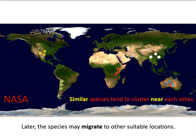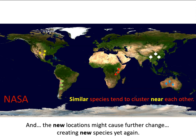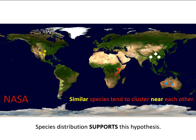Once a species originates, it may migrate to other suitable locations if it can, expanding its range. The new locations might cause further change, creating new species yet again. This will be an important theme in Darwin: as animals and plants move around the planet and encounter different environments, this has the power to change species and create new species. So Exhibit B is about how species distribution supports this hypothesis of species origin — new species coming from pre-existing species — and Darwin argues species distribution supports this idea.